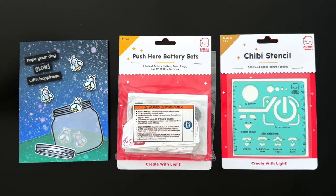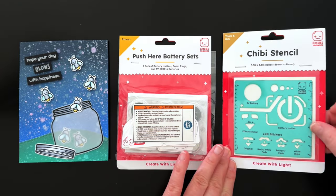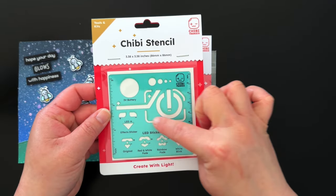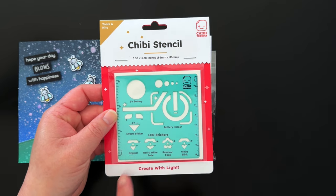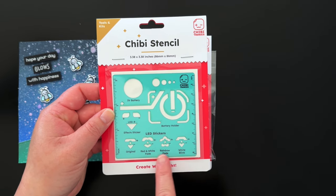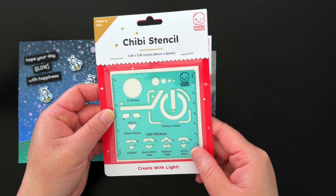Our next product is the new and improved Chibi stencil. You asked and we answered. Our new Chibi stencil contains the battery holder shape, battery outline, and the animating LED flower, gem, and heart shape outlines, as well as our original LED and effect sticker outlines.